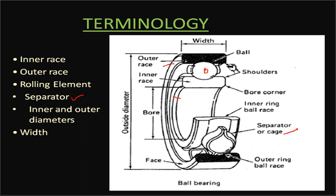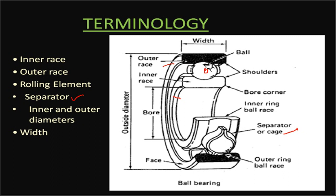The inner diameter of the inner race is called the bore diameter, on which the shaft is mounted. The outer ring has a groove called the outer ring ball race, and the inner ring also has a groove called the inner ring ball race. The rolling elements run within these grooves.